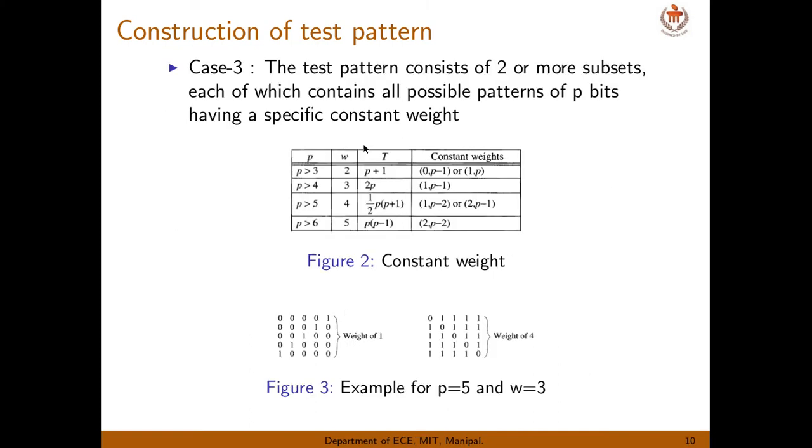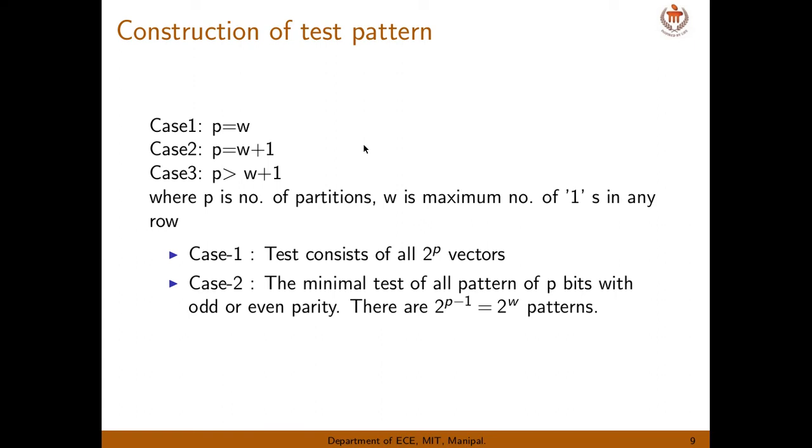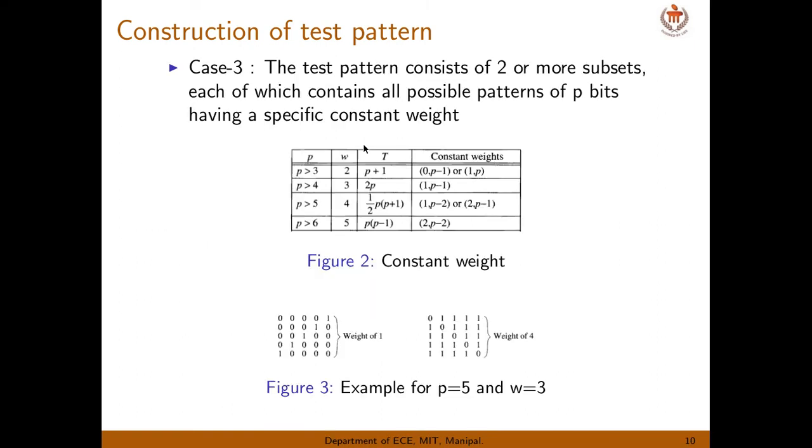In case 3, you have P is greater than W plus 1. So in that case, what happens? Test pattern consists of two or more subsets, each of which contains all possible patterns of P bits having a specific constant weight. And this constant weight is given by a table. So we have to refer this table and we have to decide.